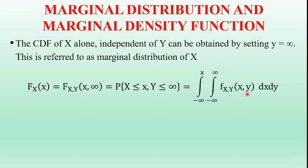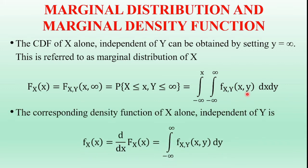The corresponding probability density function of random variable X alone, independent of random variable Y — what is the relation between the probability density function and probability distribution function for a single random variable? The probability density function equals the derivative of the cumulative distribution function. That is, small f_X of x equals d/dx of capital F_X of x.